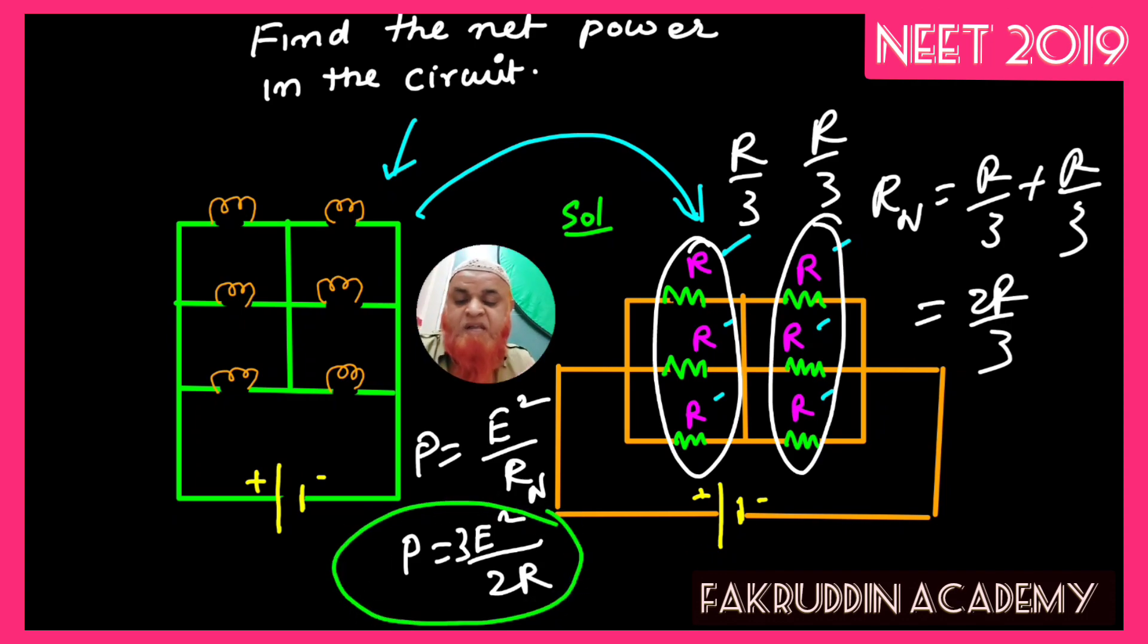So your answer is: power is equal to 3E²/2R. Hope you have understood this problem. Thank you very much. Have a nice day.